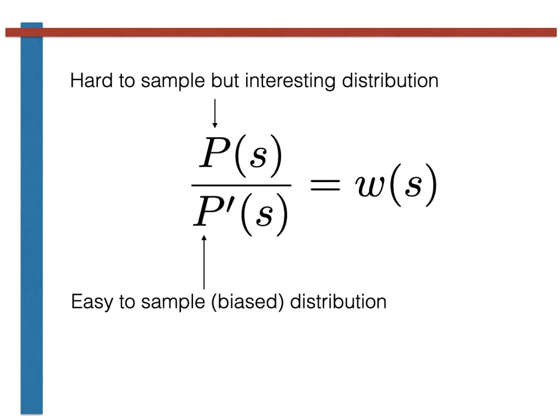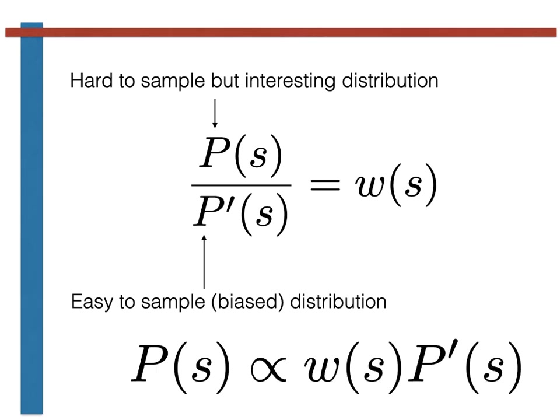You then note that p of s, the probability distribution of interest, is proportional to w of s multiplied by p prime of s. By sampling p prime of s and noting the weights, you should therefore be able to extract the distribution of p of s.